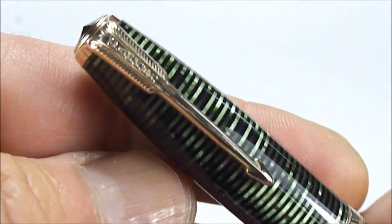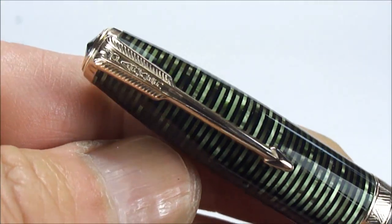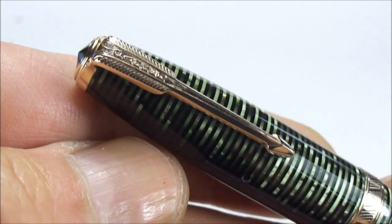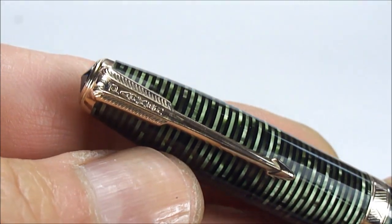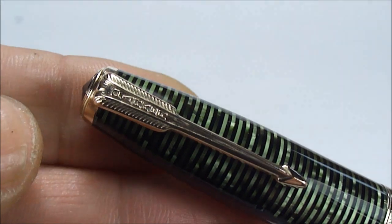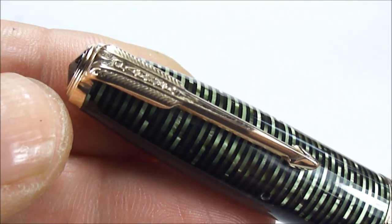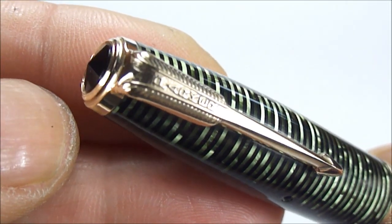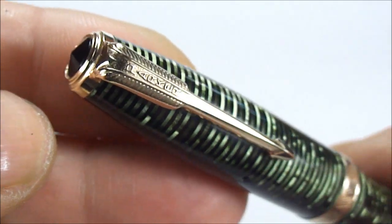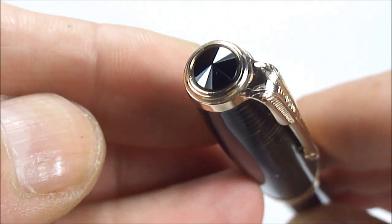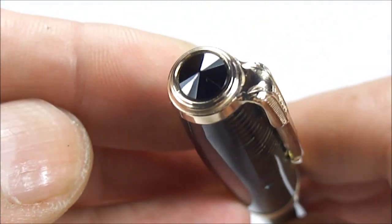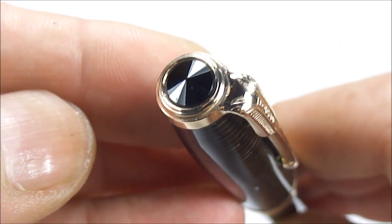If we show you the clip here you'll see it's a very recognizable clip of the era if you like and this is what they term as the split arrow clip. Okay let's give you a little bit of a close-up there a lovely example and to the top there you've got this conical black jewel to the top of the cap there.